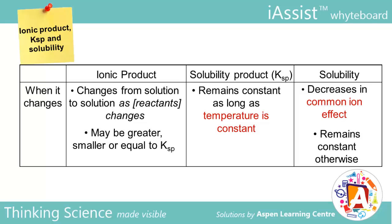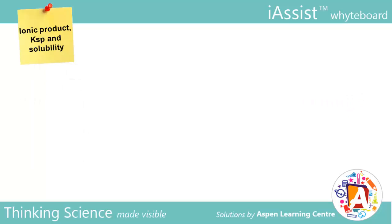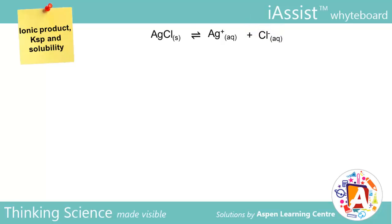Now that we know what ionic product, Ksp and solubility are, let's look at a series of four solutions designed to highlight some important concepts. We have a salt, AgCl. It is sparingly soluble and can dissolve to give us Ag⁺ ions and Cl⁻ ions. Note that the reaction is reversible. To keep things simple, we will let Ksp of AgCl be 1×10⁻¹⁰ mol² dm⁻⁶.